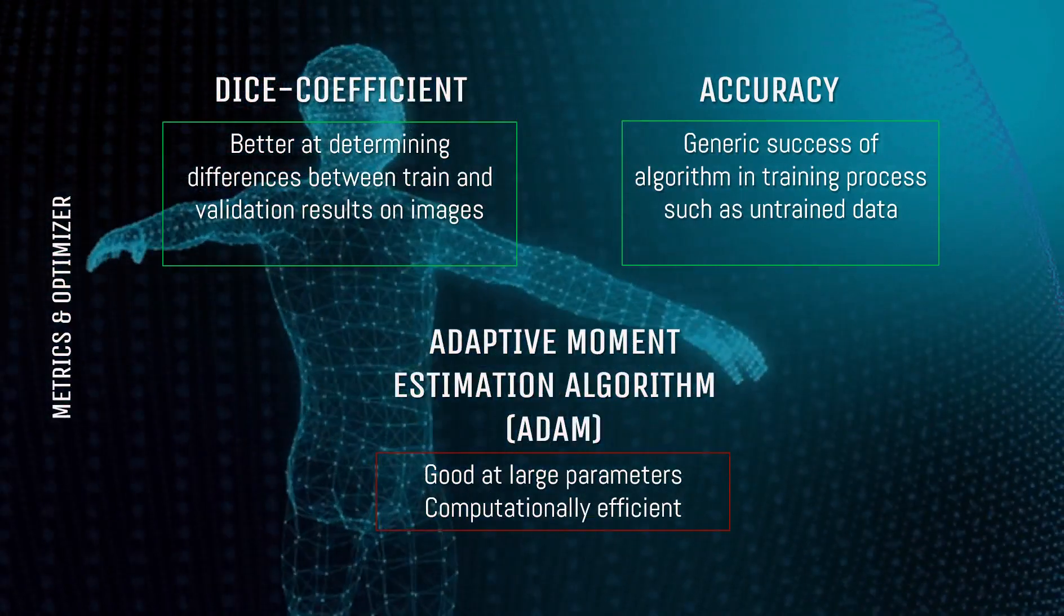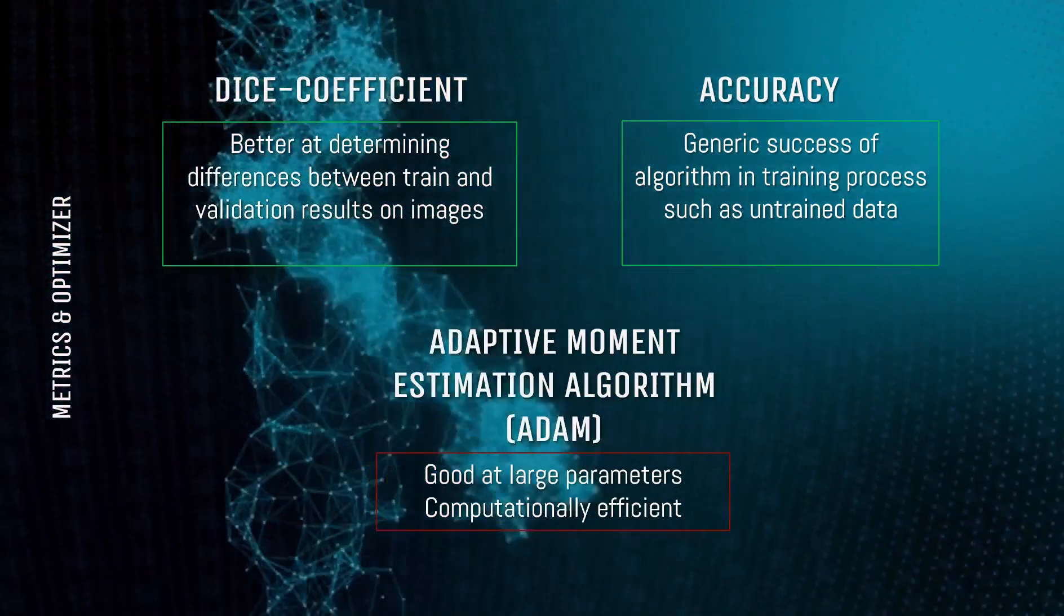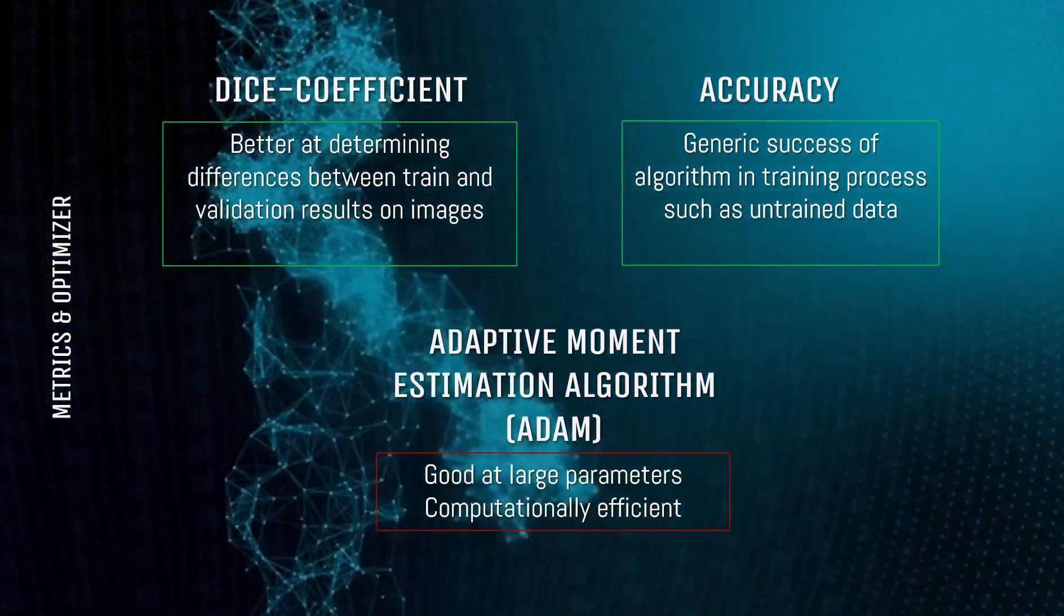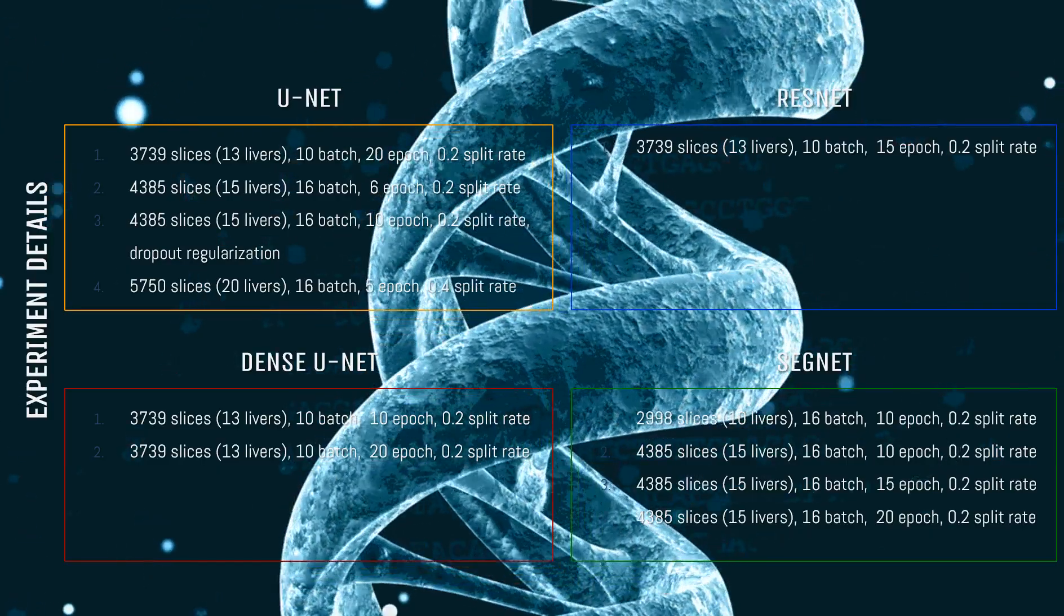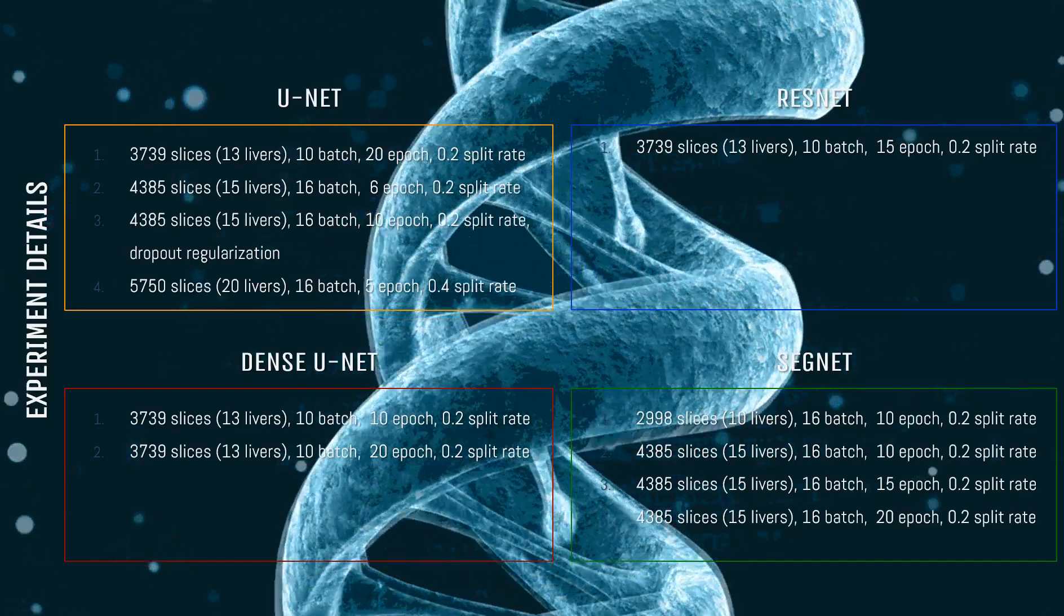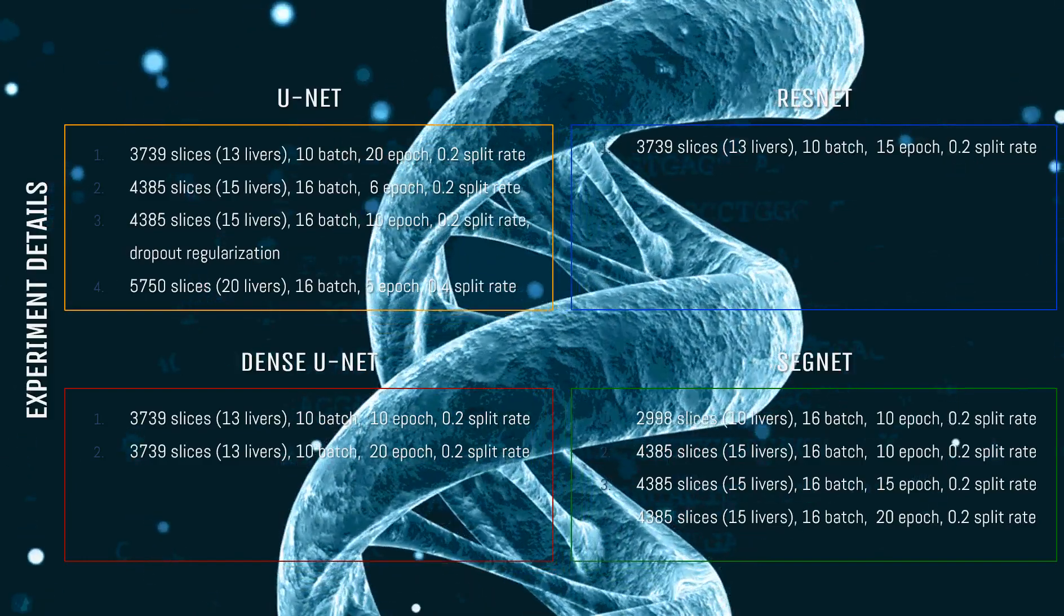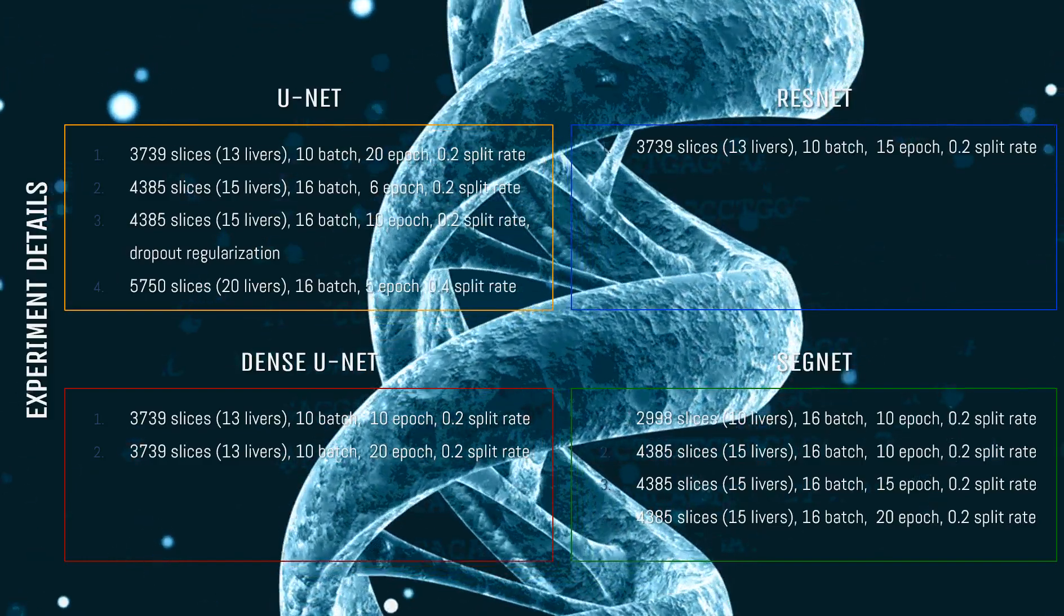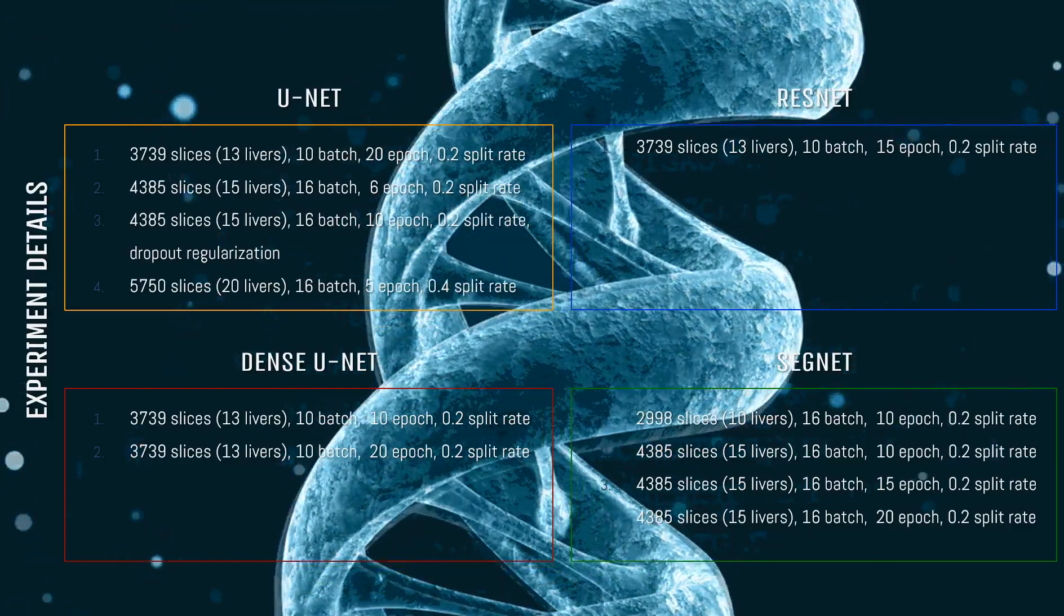We used the Adam function to optimize our architectures. This optimization method used to balance noisy and unstable data is very fast and low cost. In our experiments, we used the parameters and amount of data displayed on the screen. The data of patients used in these experiments are anonymous. Liver tomography images, which are at 512 by 512 resolution, were reduced to 256 to speed up the training process.